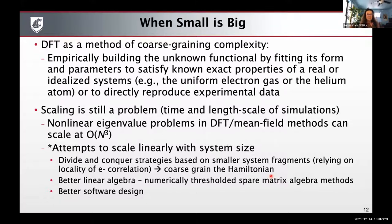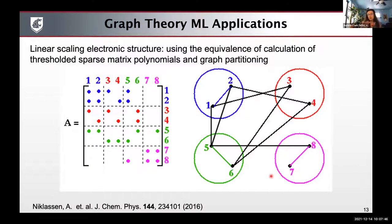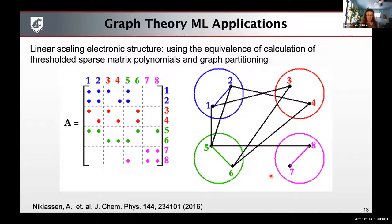You can do this with divide-and-conquer strategies where you're coarse-graining the Hamiltonian, there's better linear algebra, there's better software design. People can also use graph theory machine learning approaches for trying to understand and develop linear scaling electronic structure, by taking equivalencies in how you deal with sparse matrix polynomials and graph partitioning. This was done a few years ago by Anders Nicholson — recognizing that within DFT, you can write a Fermi operator expansion as a matrix polynomial and then use graph partitioning, taking the characteristic polynomial of the adjacency matrix and rewriting it in the context of partitioned subgraph polynomials.